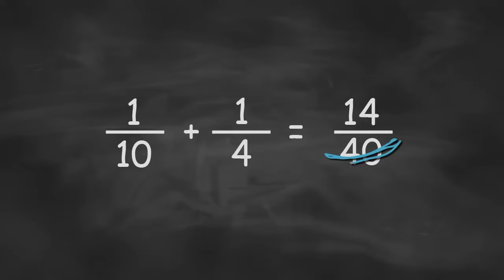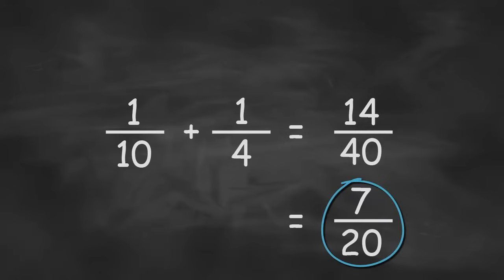Now while this answer is correct, it's not yet simplified, because this can be divided into a smaller number. So both the top and the bottom can be divided by 2, giving us 7 twentieths. Now that's our correct answer and most simplified answer.